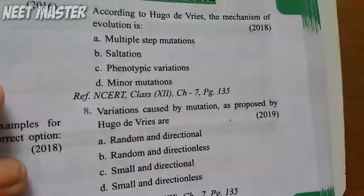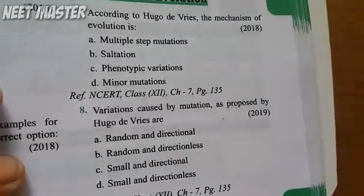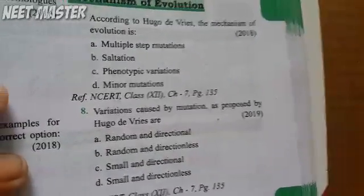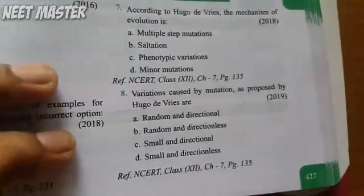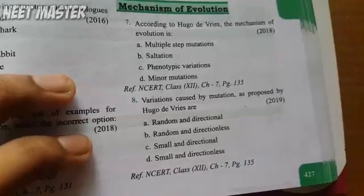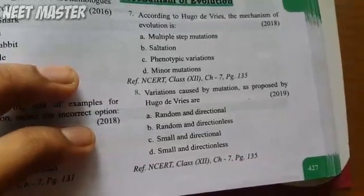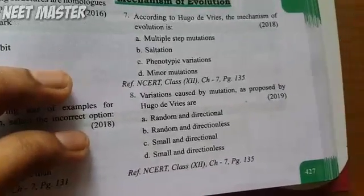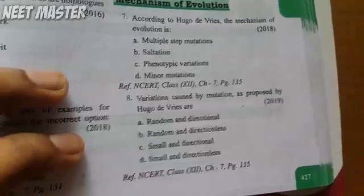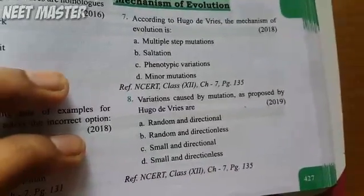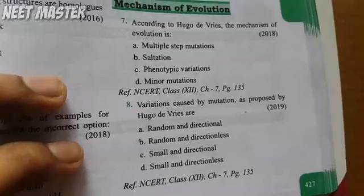According to Hugo de Vries, the mechanism of evolution is: multiple step mutations; saltations; phenotypic variations; or minor mutations?